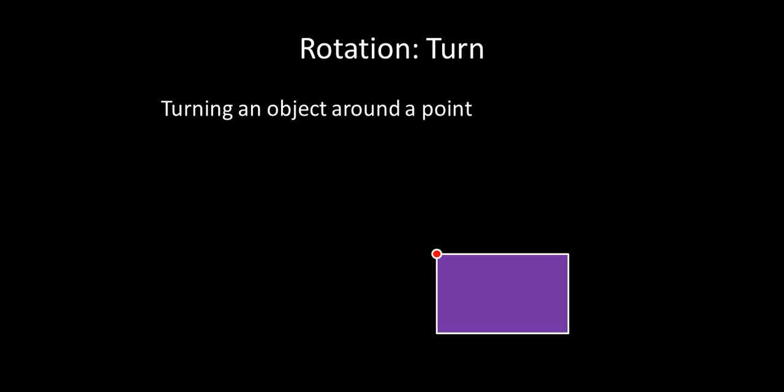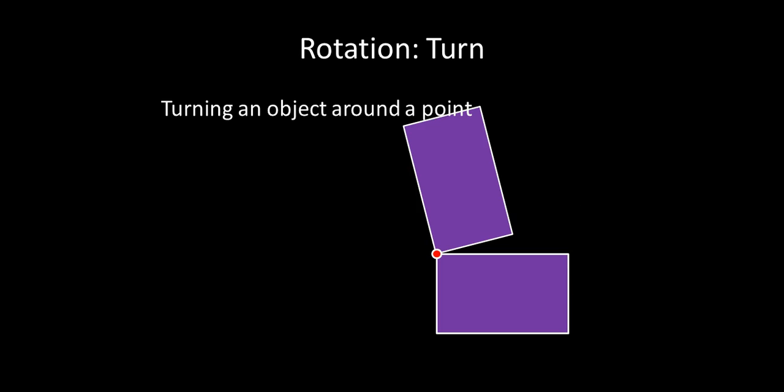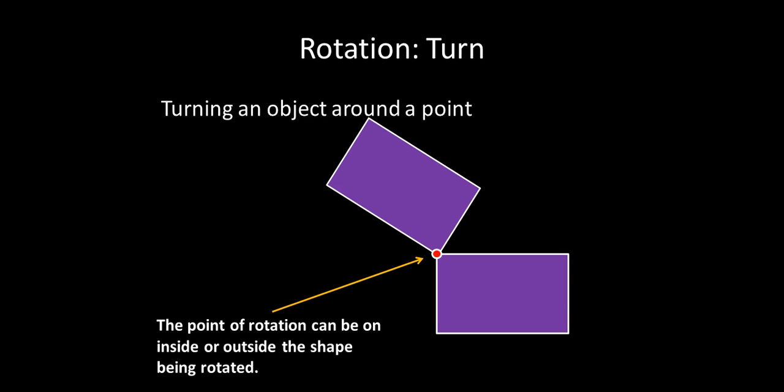The next transformation is called rotation. Rotation is when you turn an object around a point. So in this case, I've given us the red point on the slide there. So what you're going to see is that I'm going to rotate this rectangle all the way around that point. And you can rotate it as far as you want or as little as you want. And that point that you're rotating around is called the point of rotation. And it can be on the inside or outside of the shape or actually on the shape. In this case, it's actually on a corner or a vertex of the rectangle.